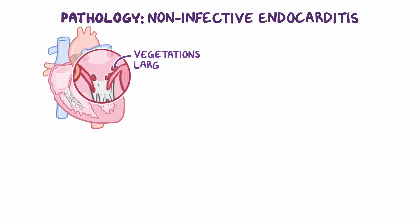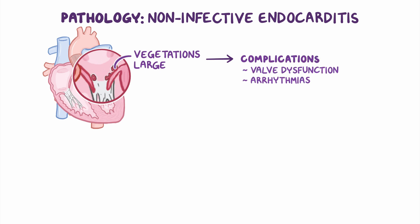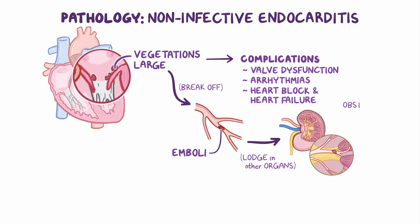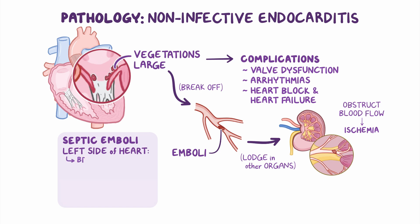These vegetations are large, so they can interfere with the normal function of the heart, causing complications like valve dysfunction, arrhythmias, and in severe cases, heart block and heart failure. In addition, fragments of these vegetations can break off, forming emboli that can escape from the heart into the systemic circulation. These emboli can then lodge in other organs and obstruct blood flow, causing ischemia. When the septic emboli come from the left side of the heart, they can reach the brain, limbs, spleen, and kidneys, while right-sided emboli typically reach the lungs.